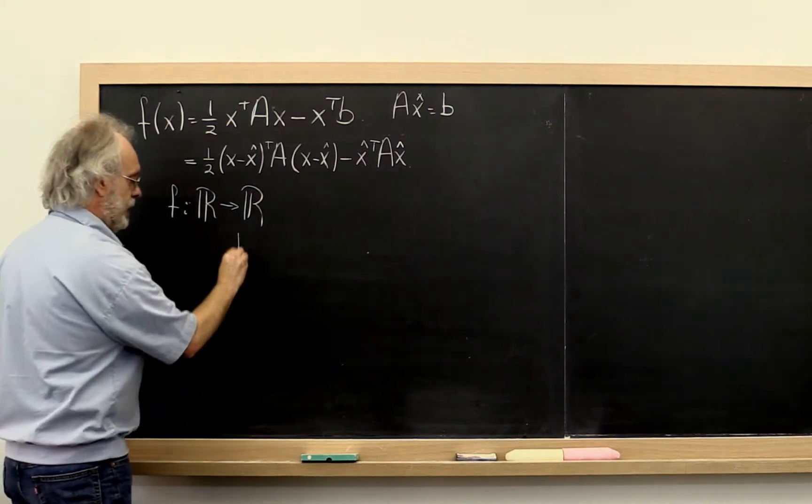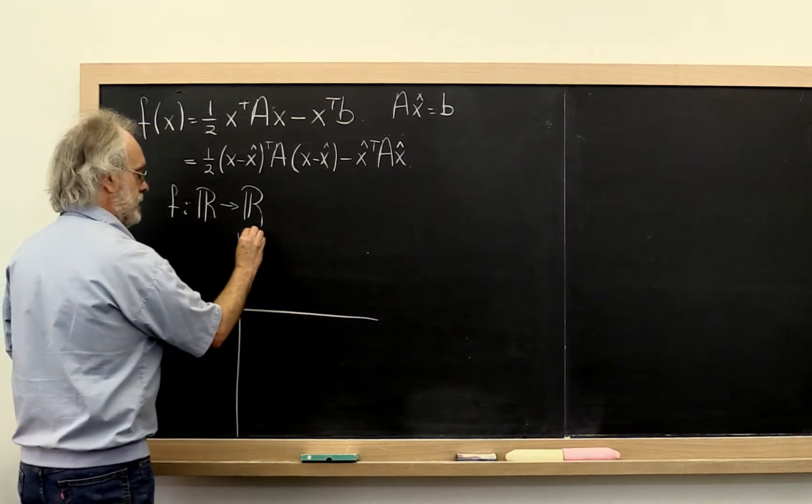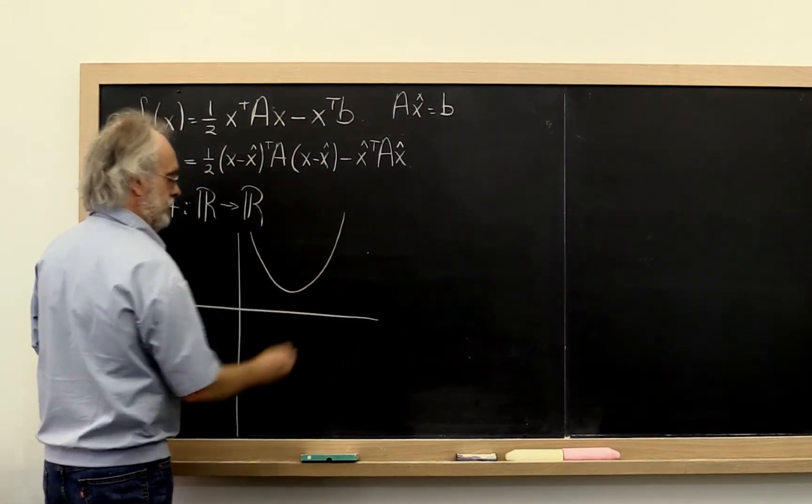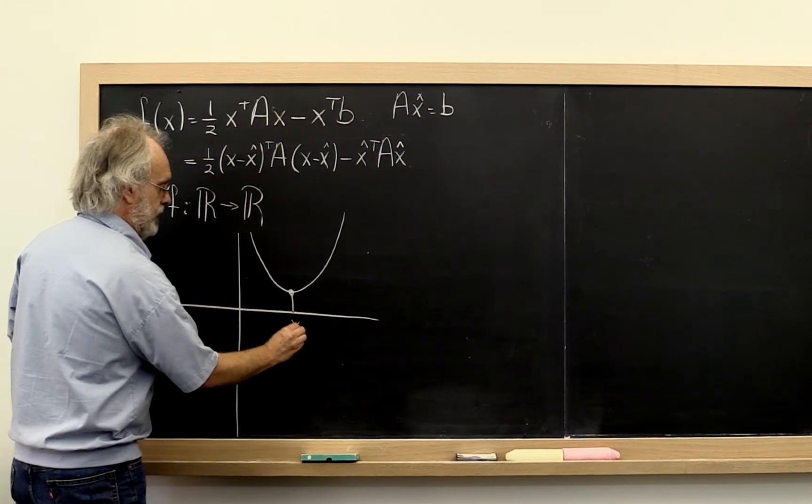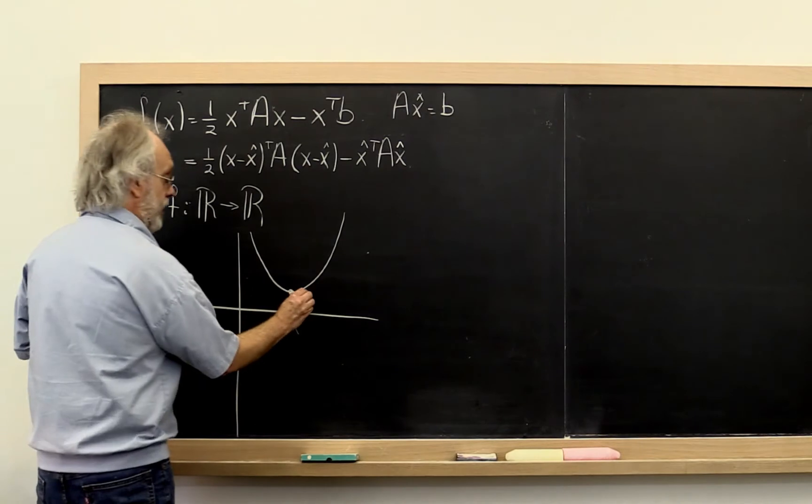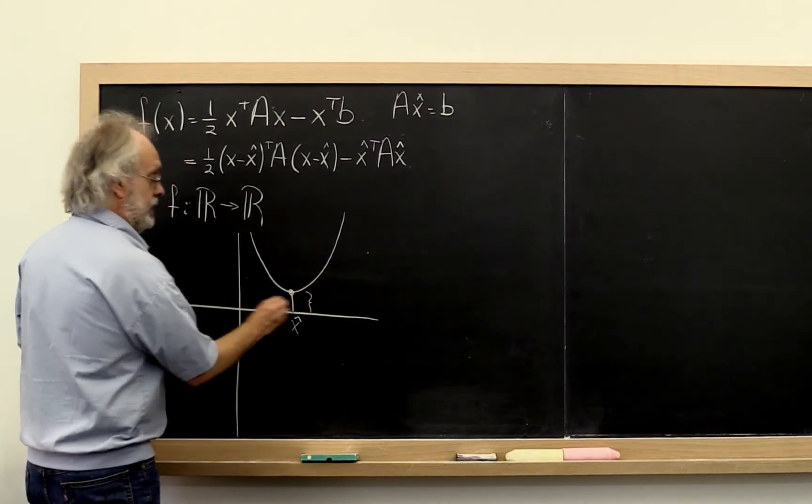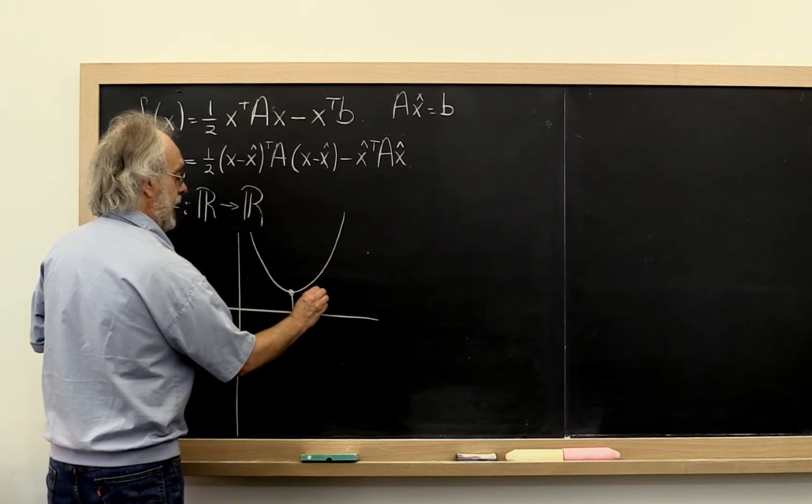And the picture that we then get is that we have some parabola like this. The minimum happens at the point x hat like that. And then the value that is attained at the minimum would be equal to x hat.